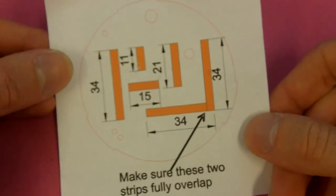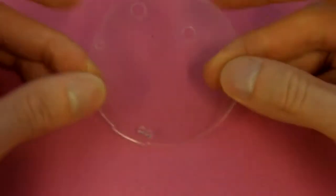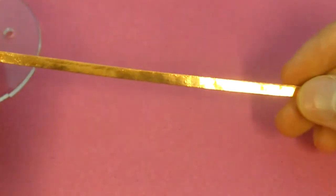What you'll need is your instruction sheet, a piece of clear acrylic cut into a circle, a pair of scissors, and your copper tape.